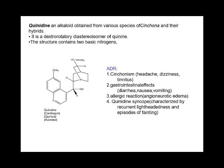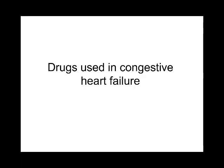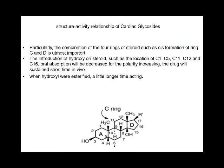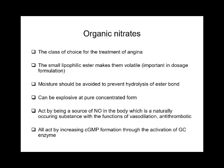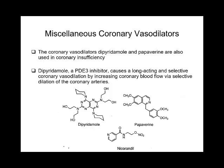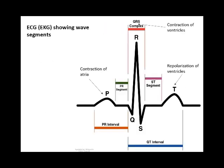Quinidine and quinine have the same basic structure but are diastereomers — one is used as an anti-arrhythmic and the other as an anti-malarial. Using quinine as an anti-malarial carries a risk of causing arrhythmia as a side effect. Using quinidine as an anti-arrhythmic causes a side effect syndrome called cinchonism.